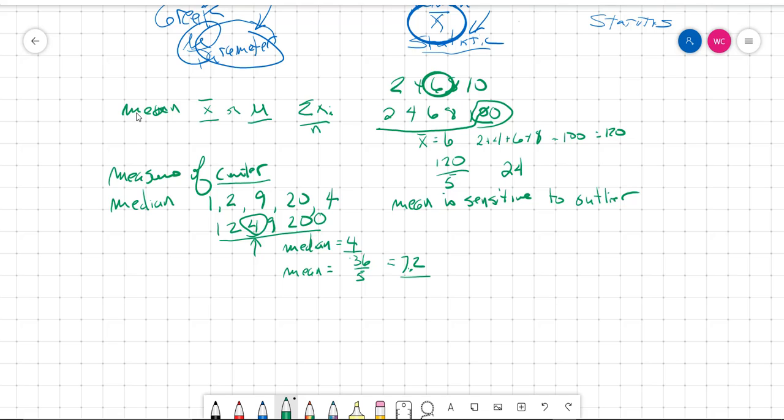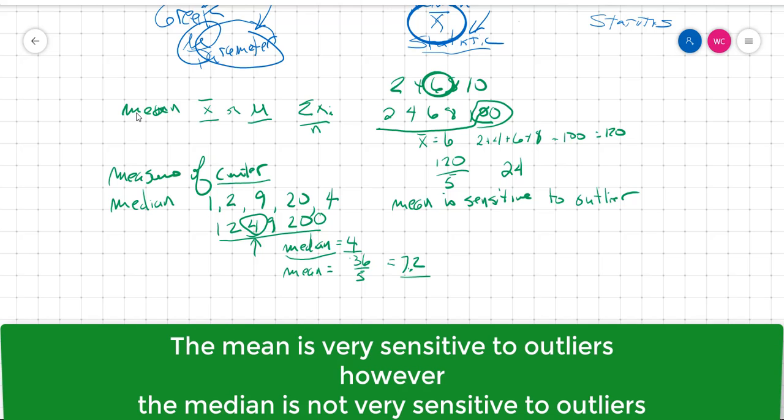What happens to the median if we get an outlier? So the mean is obviously going to change a lot, right? When we change that 20 to 200 and then calculate the mean of that, it's going to be much bigger. But what happens to the median? Does anything happen? And the answer is no. The median doesn't change at all. So we can say that, in general, the median is not sensitive to outliers. So whereas the mean is sensitive to outliers, the median is not.